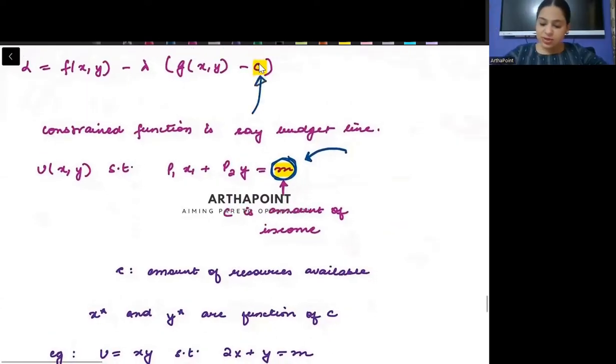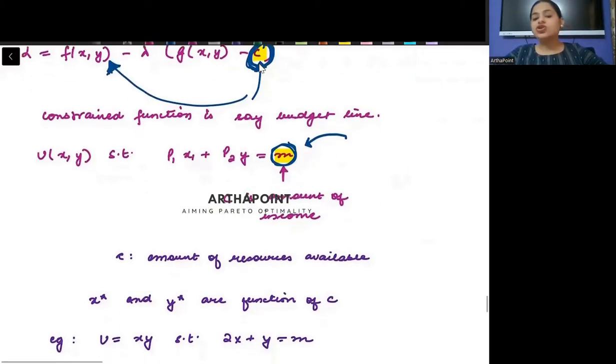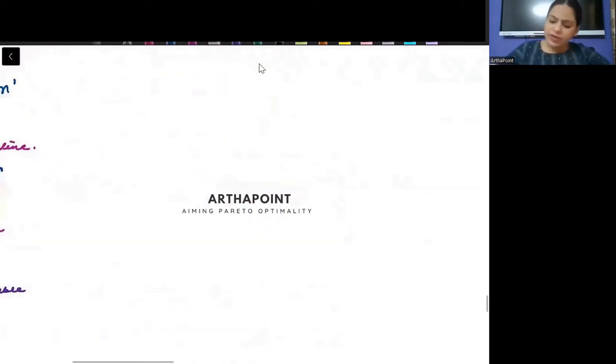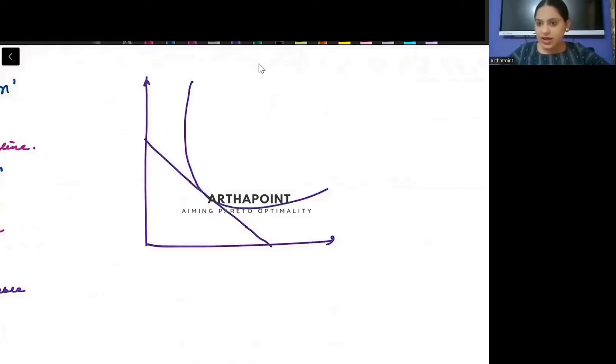And if I will be able to afford a better bundle, then my utility will also increase. So you have to understand that C is the amount of resource that is available. And as the value of this C will change, as the amount of resource that I have changes, it will impact my objective function. When your income increases, let's say this is the income of the consumer, this is my budget line and these are my indifference curves. This is my equilibrium.